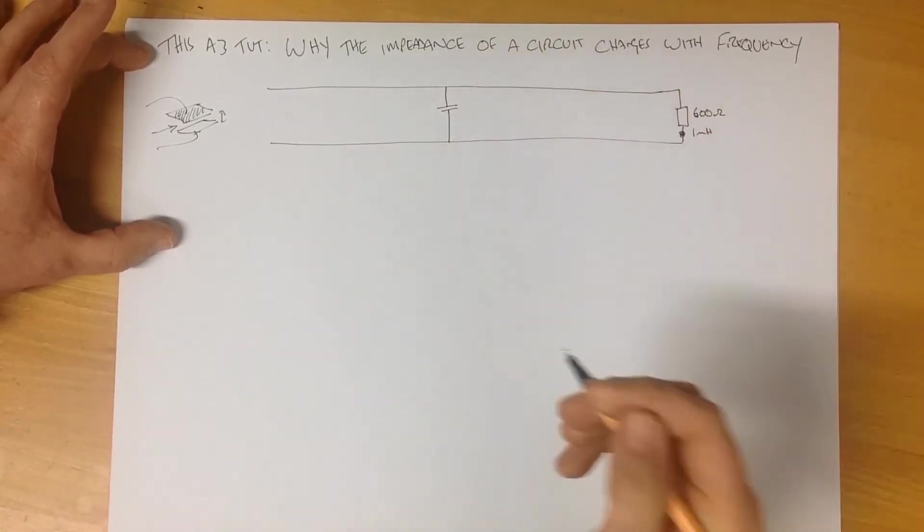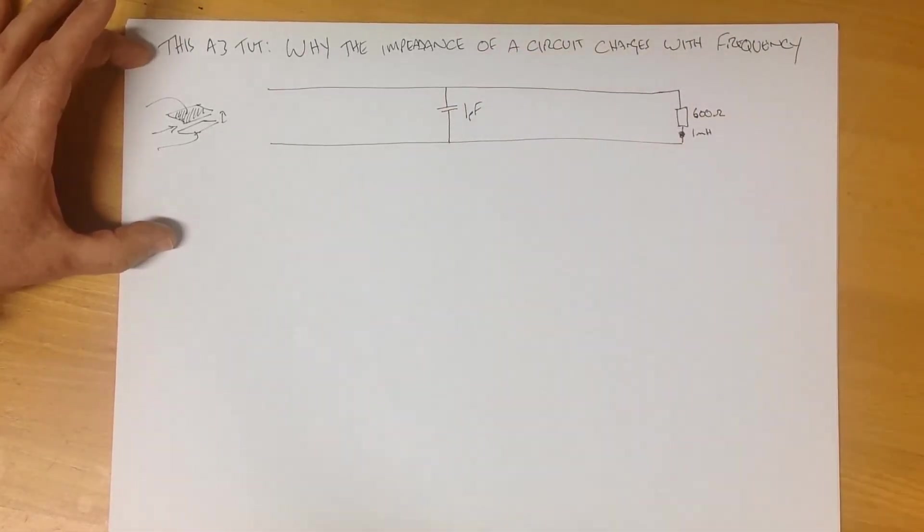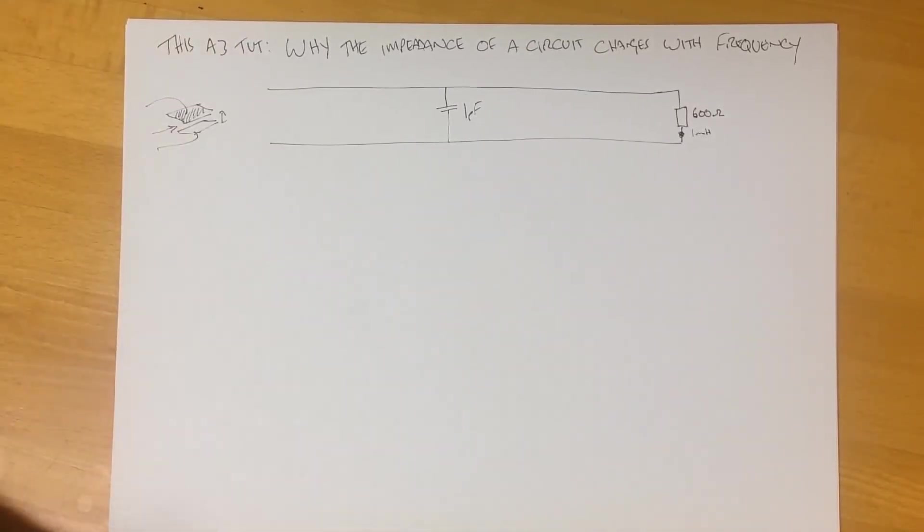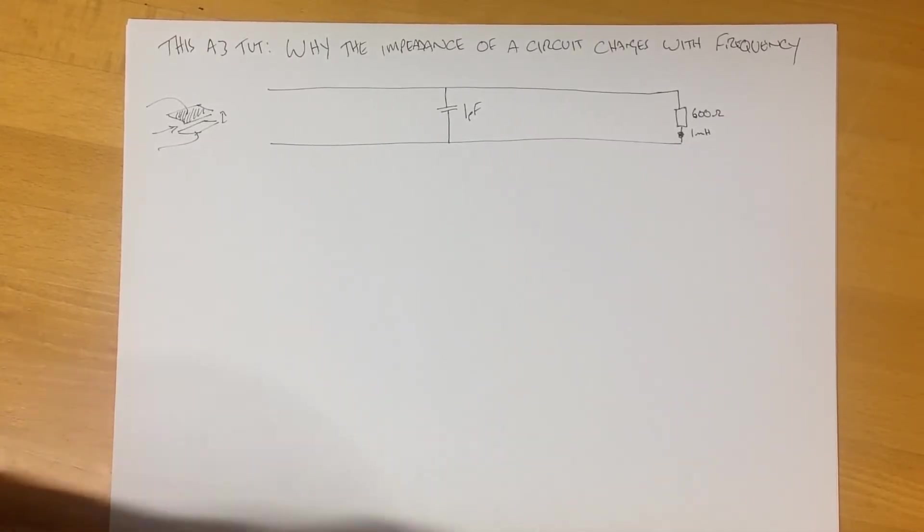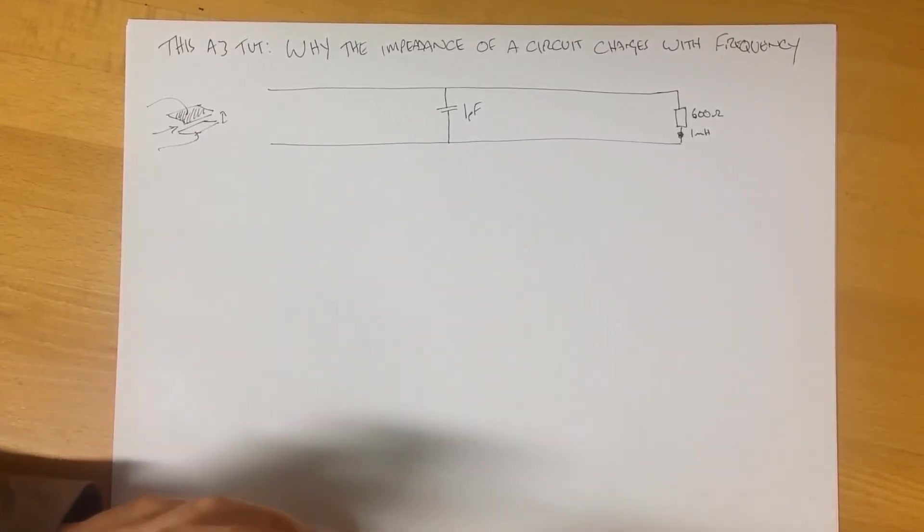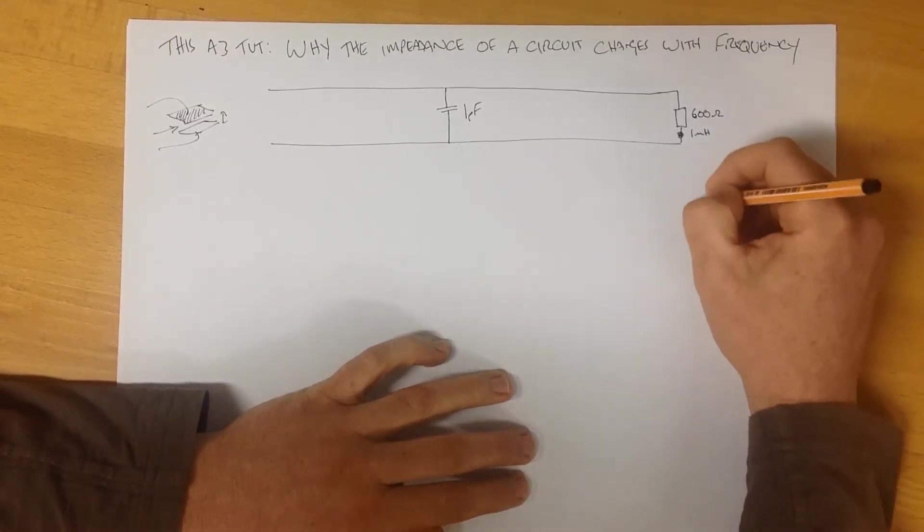This transmission line is effectively a capacitor. Here we have one plate, here we have another plate, we have a distance between them, and we have some form of dielectric material in here. So we can modify our, up until now, idealized circuit with some form of realistic representation of this capacitance. And again, for the purposes of this, I'm going to pick a number and I'm just going to call it 1 picofarad. So it's a very low capacitance.